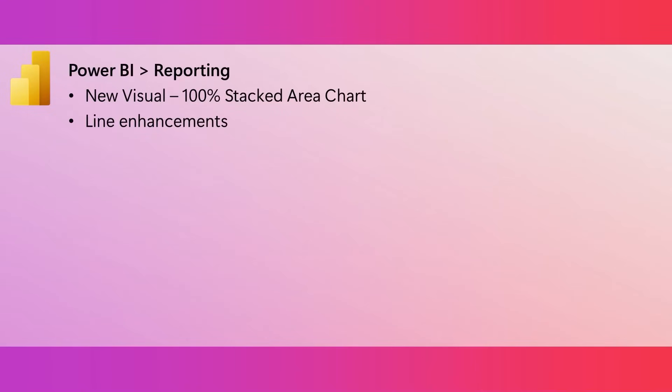For reporting, we have a new visual for you: the 100% Stacked Area Chart. It is exactly what its name says — it displays the relative percentage of multiple data series as stacked areas, where the totals always equal 100%. We are also introducing more control over line charts. You can configure the transparency, there are additional options for smoothing lines, and for step lines.